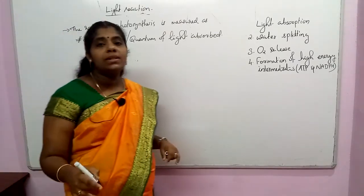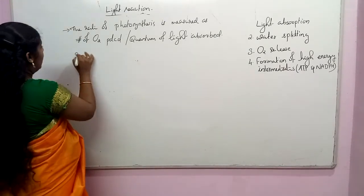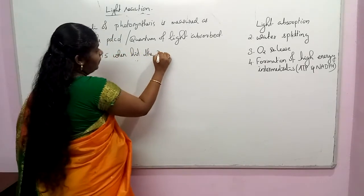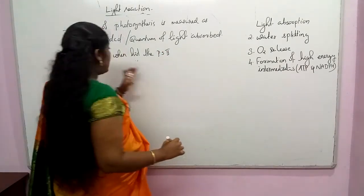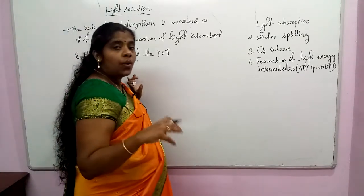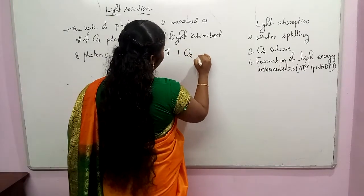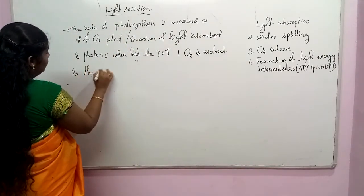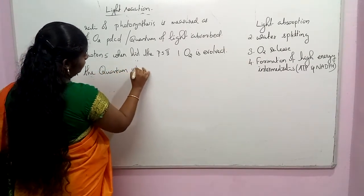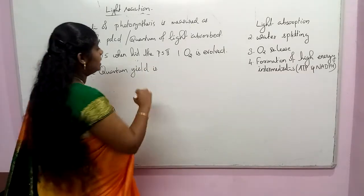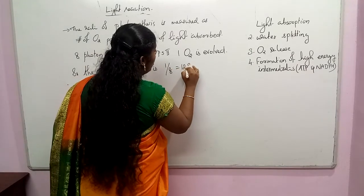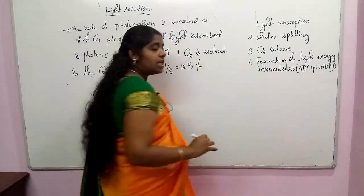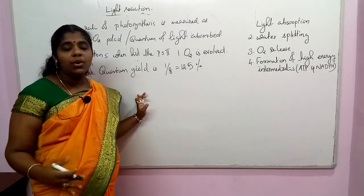Eight photons are hitting PS2, and from that, one oxygen molecule is evolved. So we can say the quantum yield of this photochemical reaction is one divided by eight, which equals 12.5%. That is the quantum yield of this photochemical reaction.